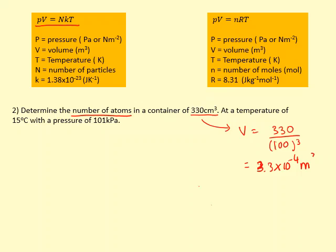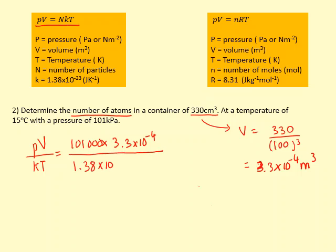I'm going to put these into the equation, so I'm just going to do PV over kT, ensuring they're all in the right units and using brackets. If I solve that, I should get 8.4 times 10 to the 21 atoms or particles in this gas.